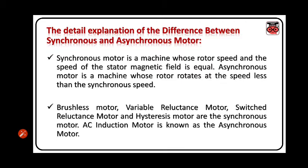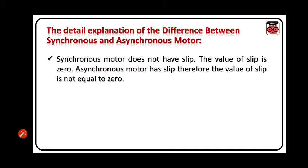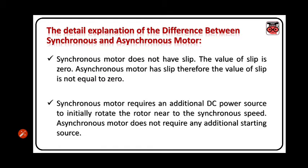Brushless motor, variable reluctance motor, switched reluctance motor, and hysteresis motor are synchronous motors. Synchronous motor does not have a slip — the value of slip is zero — whereas asynchronous motor has a slip, so the value of slip is not equal to zero. Synchronous motor requires an additional DC power source to initially rotate the rotor near to the synchronous speed, whereas asynchronous motor does not require any additional starting source.